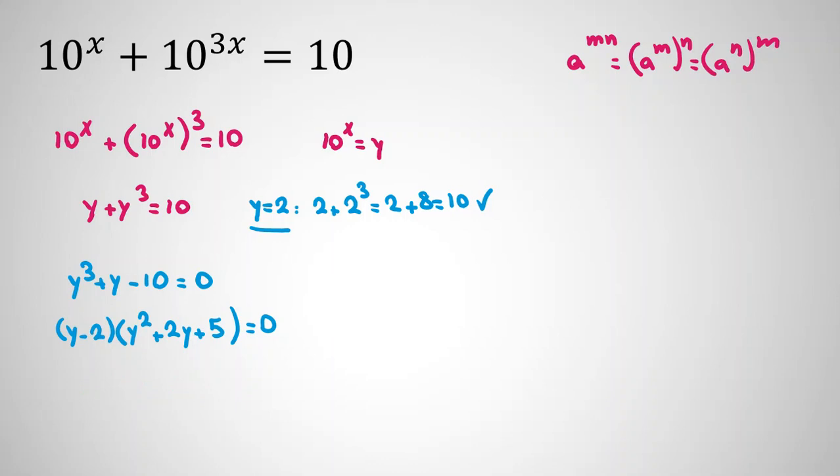The product of two terms equals 0, so we can conclude the first term is 0 or the second term is 0. The first term is 0 gives y equals 2. We've checked. First case.